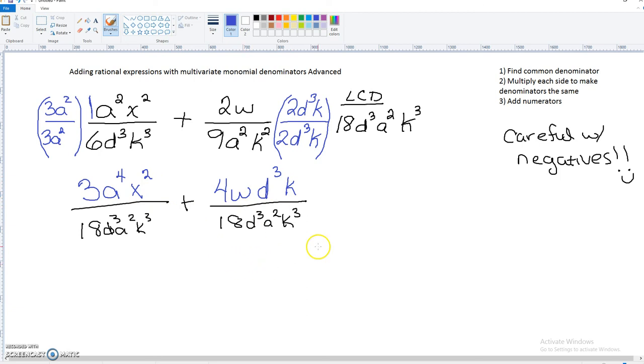So in this case, what our answer is going to look like and what ALEKS is going to want: you're going to have to press that fraction key first before you start typing all this in. And you're going to put that 3a⁴x² plus 4wd³k.